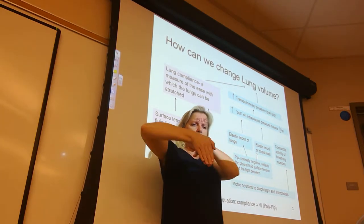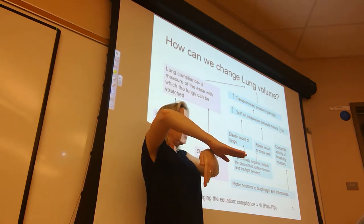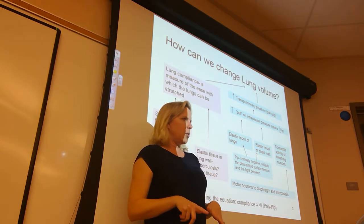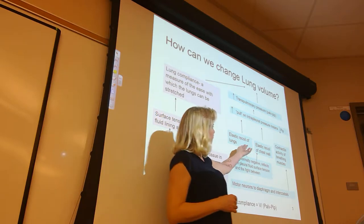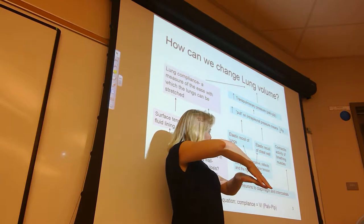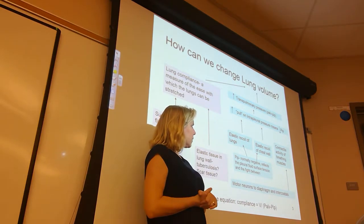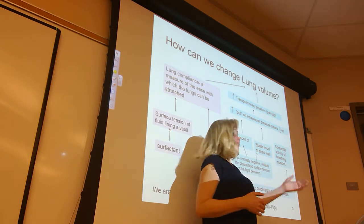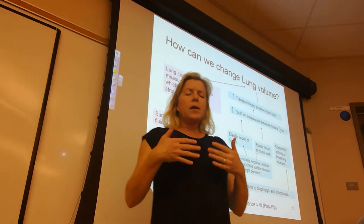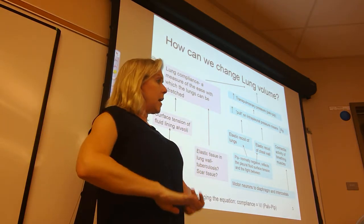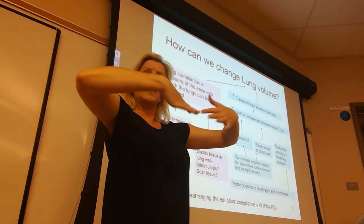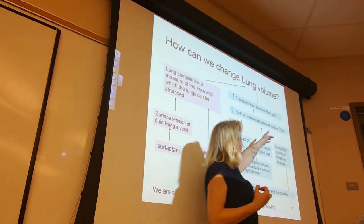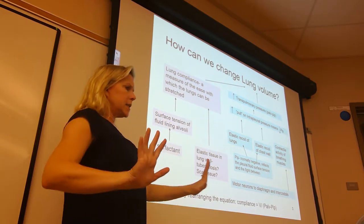The chest wall and the lungs want to recoil in different directions, constantly pulling against each other, which helps maintain negative intrapleural pressure. We can augment this by strengthening the contraction of muscles like the external intercostals and the diaphragm. If they contract even better, the chest wall moves further in the direction it wants to, making intrapleural pressure even more negative — increasing our distending pressure.